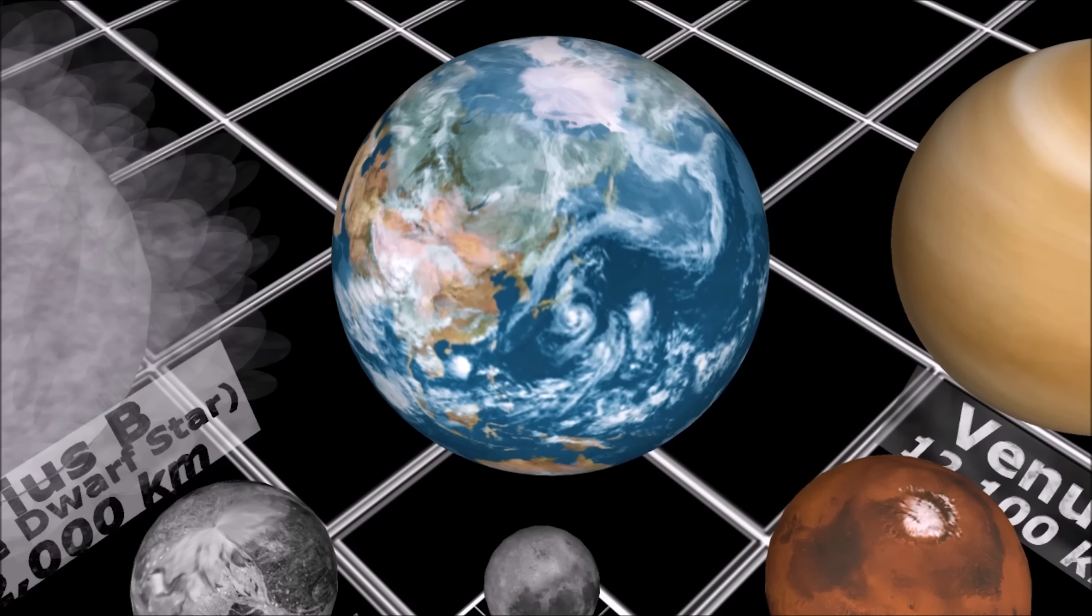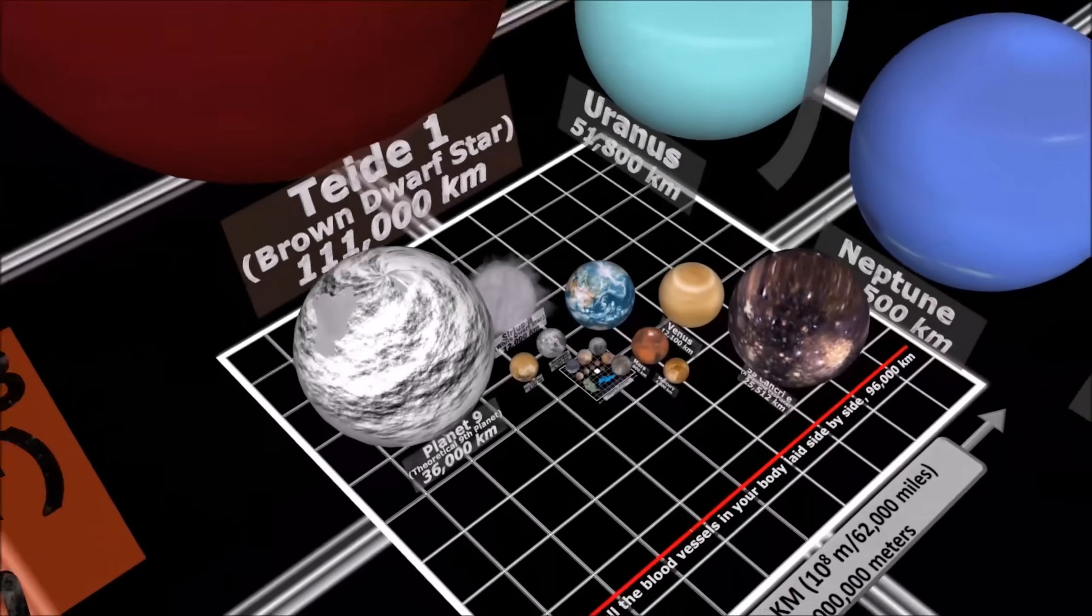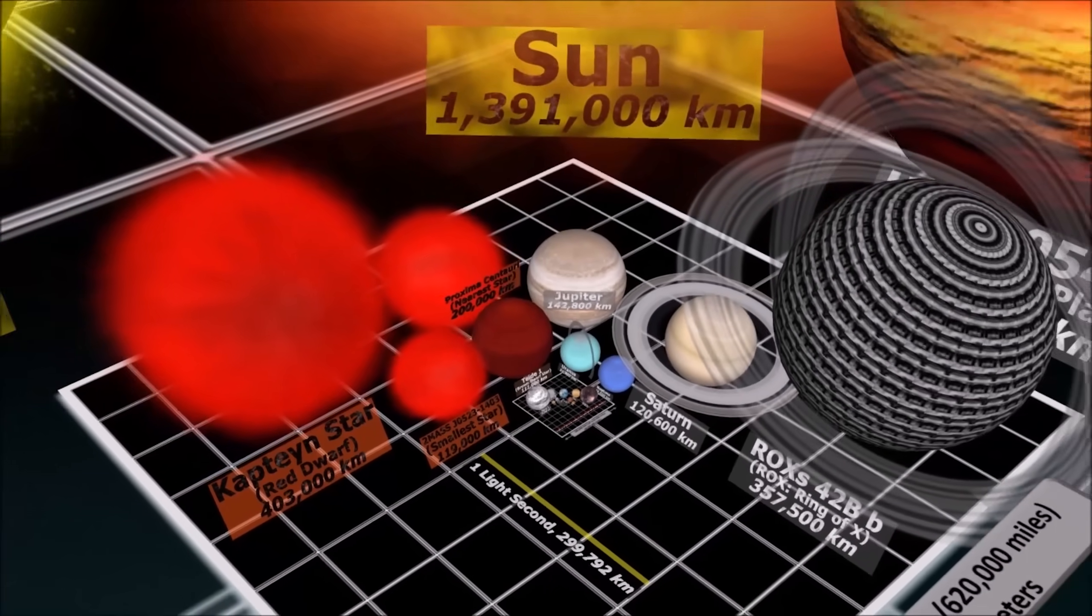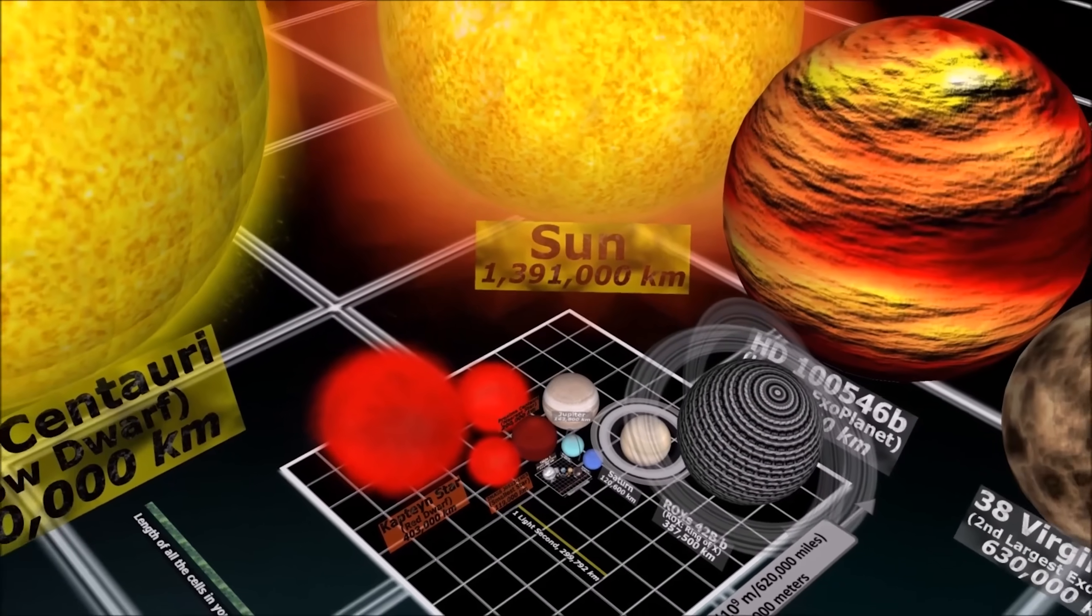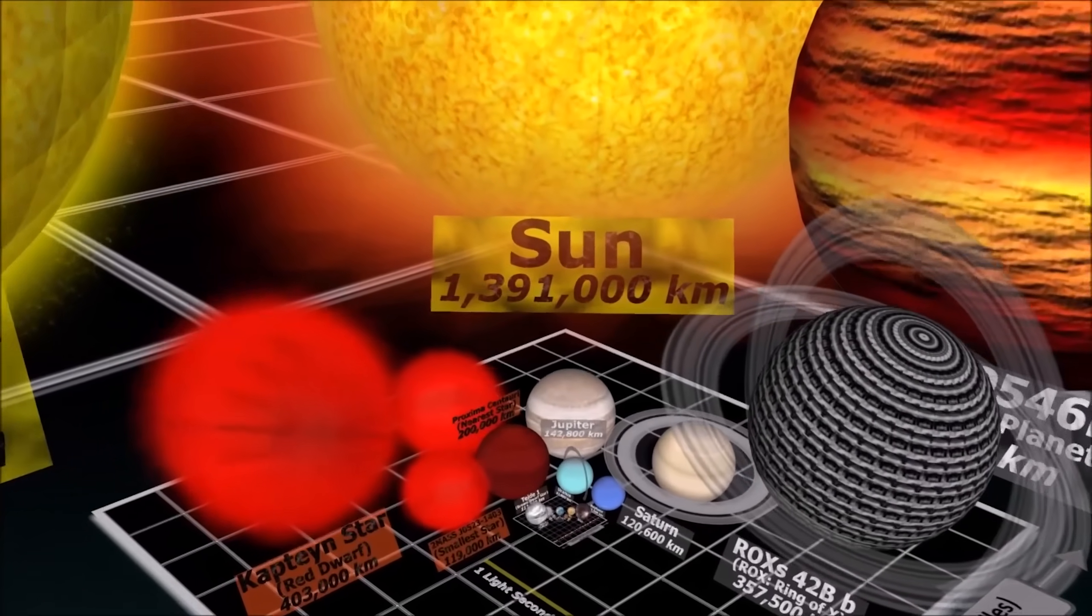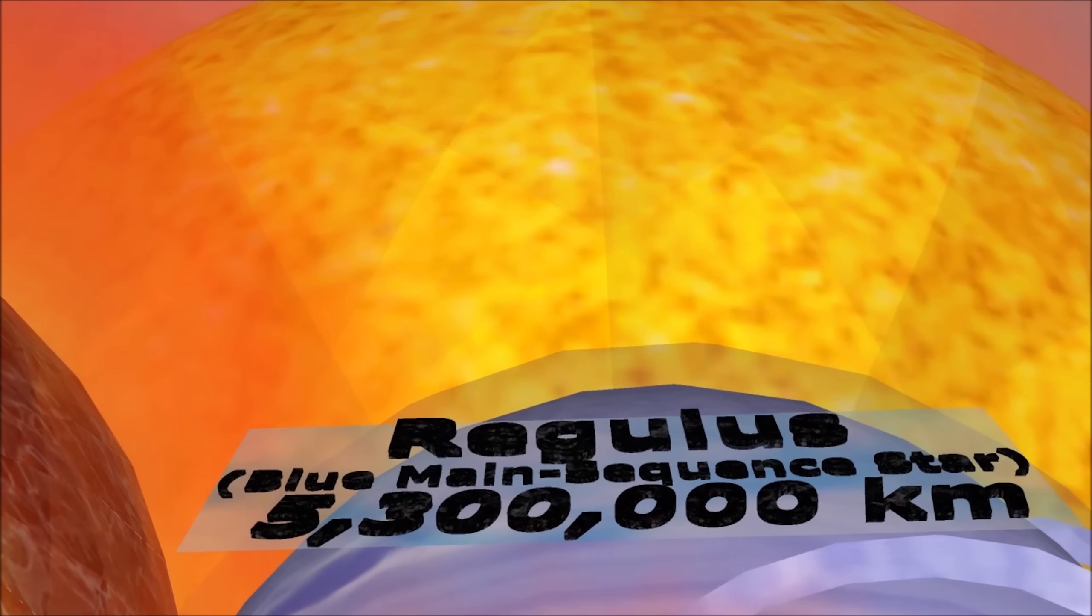That's here. That's Earth. On it, everyone you ever know, every religion, every ideology, every conflict, every experience, every saint and sinner in the history of our species lived out their lives in a speck of dust suspended in space. The sun, a ball of superheated gas, can fit a million Earths inside of it. Yet our sun is tiny compared to the really big stars out there.